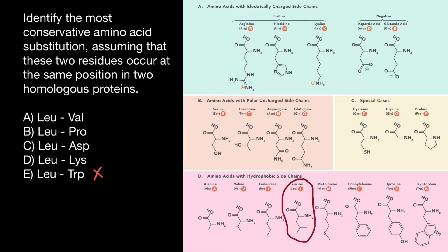Now let's check leucine and lysine. Lysine is an amino acid with a charged R group, and of course the properties are going to be very different. So such substitution is also unlikely and would also destabilize the protein. Now let's check variant C — leucine substituted with aspartic acid. Here's the backbone of this amino acid and here is the alpha carbon. In the R group we see a secondary carboxylic acid, and it is negatively charged. This tells us that such substitution is also unlikely.